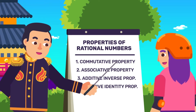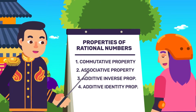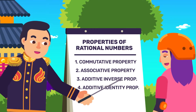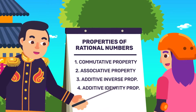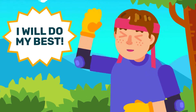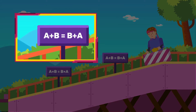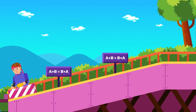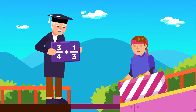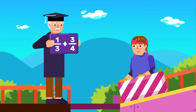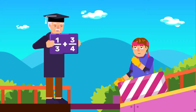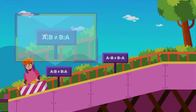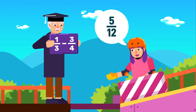Properties of operations on rational numbers. To solve problems with rational numbers, you can extend and express them in different forms using properties of rational numbers. 1. Commutative property states that the order in which we multiply or add rational numbers doesn't change the result. For example, swapping 3 over 4 plus 1 over 3 to 1 over 3 plus 3 over 4 gives the same answer. Note that the commutative property doesn't hold for subtraction and division, as it gives a different answer.